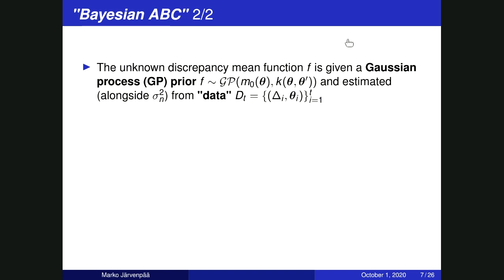There's a question from Luigi about the Gaussian noise model potentially producing negative values, whereas we expect the discrepancy delta to be non-negative. That is a good point — the discrepancy is usually non-negative, but I'm still using this GP model to model it. I will get back to it later.